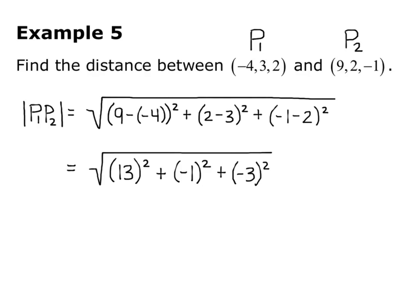Calculating this out: √[13² + (−1)² + (−3)²] = √[169 + 1 + 9] = √179. So the distance between P1 and P2 is √179.